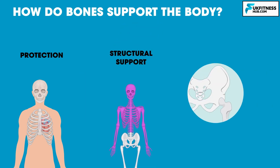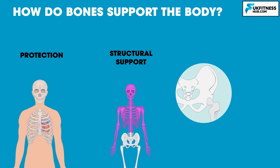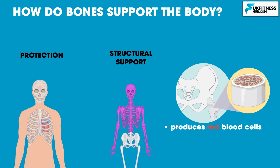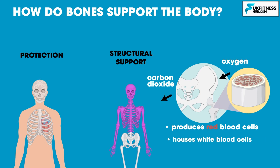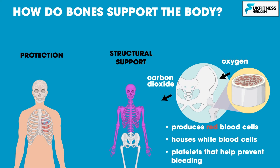The skeleton also supports the body by housing bone marrow, which produces red blood cells. These red blood cells carry oxygen to all parts of the body and remove carbon dioxide. Bone marrow also houses white blood cells, which help to protect the body from disease and foreign invaders, and platelets, which help to prevent bleeding.